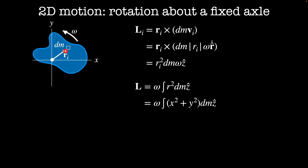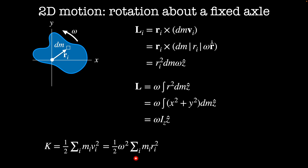Since we're in the xy-plane, r squared is just x squared plus y squared in a coordinate system centered at the axle, giving omega times the moment of inertia in the z-direction. The kinetic energy is one-half the sum over i of m_i times v_i squared. Using the definition of tangential velocity we replace v_i with r_i times omega, giving one-half omega squared times the sum of m_i r_i squared. In integral form this is one-half times the integral of r squared dm times omega squared, which is one-half I_z times omega squared.